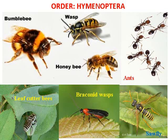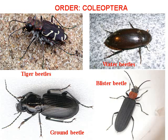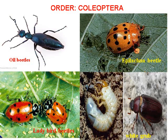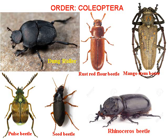Order Hymenoptera comprises bumblebees, wasps, honeybees — mostly pollinators — as well as ants, parasitoid wasps, leafcutter bees, and sawflies. Order Coleoptera includes tiger beetle, water beetle, ground beetle, and all types of weevils and beetles. Predaceous ladybird beetles also come under Coleoptera. Major pests include white grub, mango stem borer, red bar, red flour beetle, pulse weevil, and others.